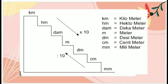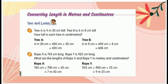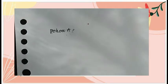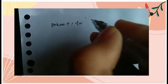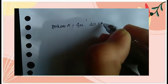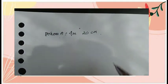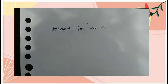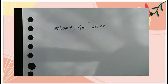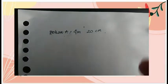Kita balik lagi pada soal yang tadi. Kita cari untuk pohon A dan pohon B. Bagaimana? Coba kita kerjakan ya teman-teman untuk penjelasannya. Jadi pohon A mempunyai panjang atau tinggi yaitu empat meter dua puluh sentimeter. Dari meter ke sentimeter, turun berapa teman-teman? Coba kita buat tangga lagi ya.